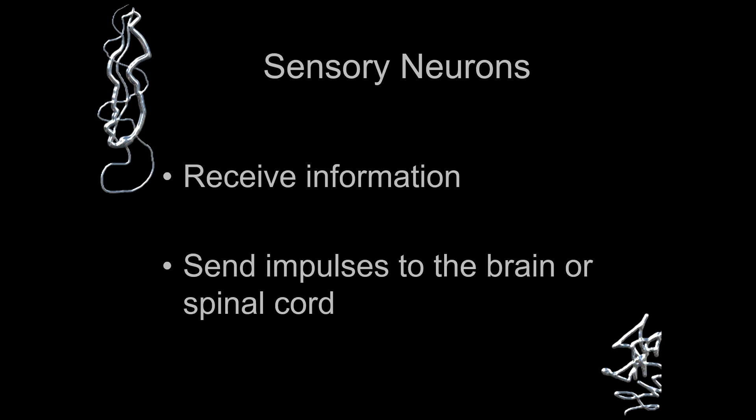Sensory neurons receive information and send impulses to the brain. We know what impulses are — whenever a neuron is carrying some messages, that is termed as an impulse. Sensory neurons send these impulses to the brain or the spinal cord, depending upon the signal.